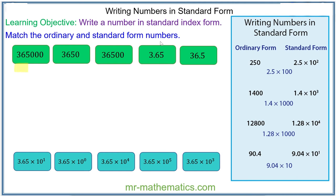Okay, we'll begin with 365,000. You can see we have 3.65 multiplied by 100,000, which is 3.65 multiplied by 10 to the power of 5. So this one matches with this one.